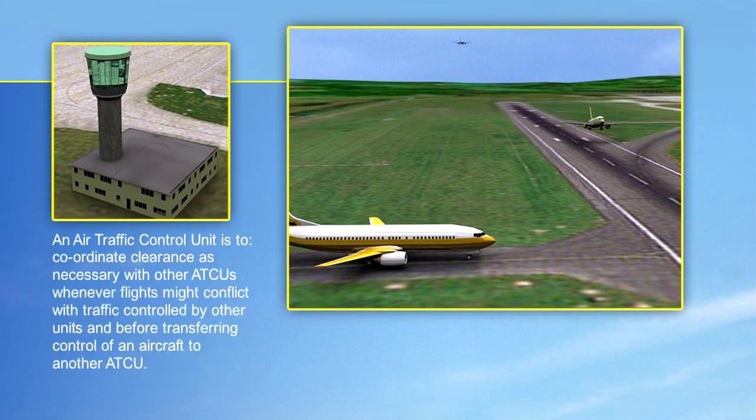The ATC unit must coordinate clearances as necessary with other air traffic control units whenever flights might conflict with traffic controlled by other units, and before transferring control of an aircraft to another air traffic control unit.